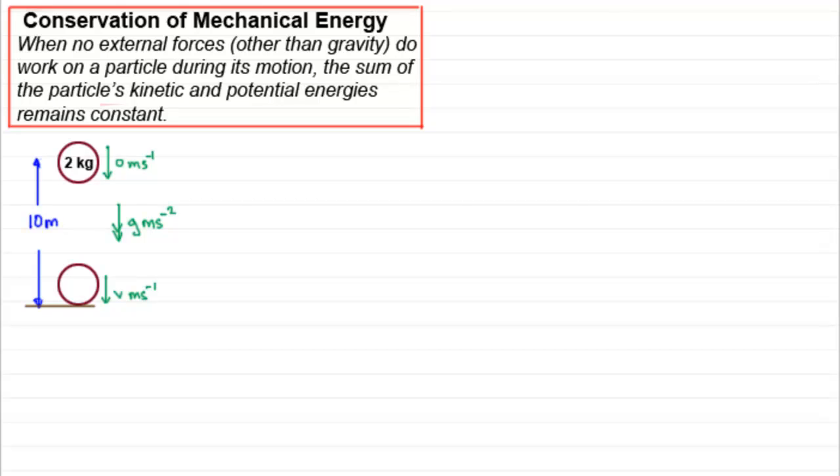Now, what I've got here is a particle of mass 2 kilograms being released from rest at a height of 10 meters. It falls freely under gravity. What I want to do is find out what its speed is as it hits the ground.